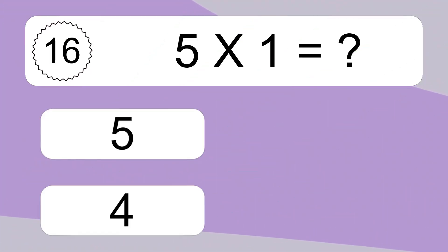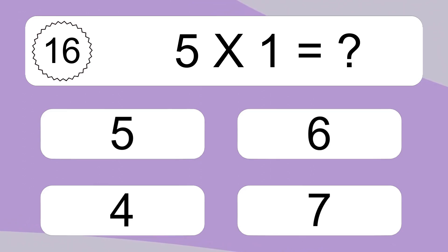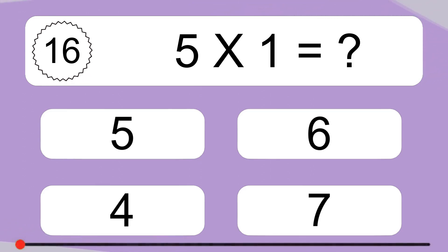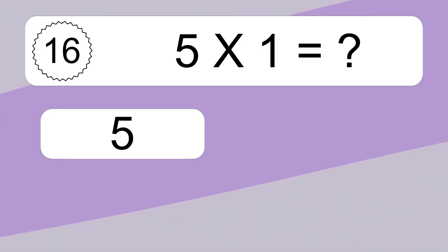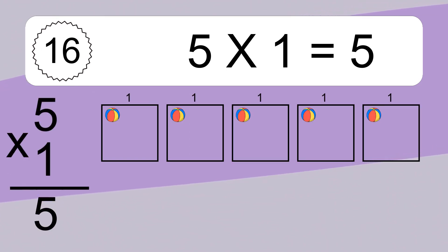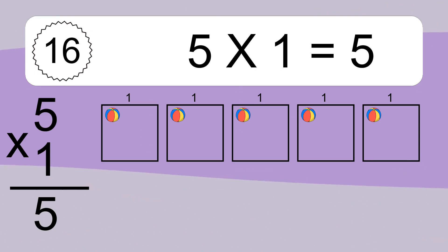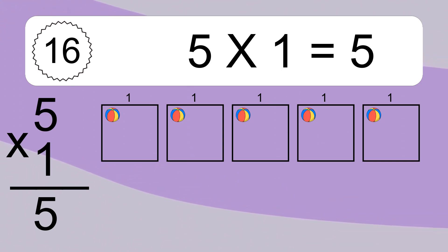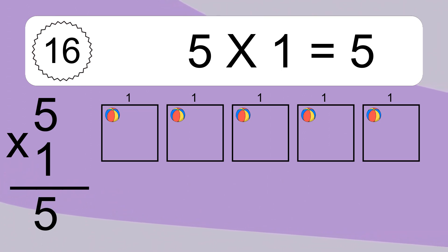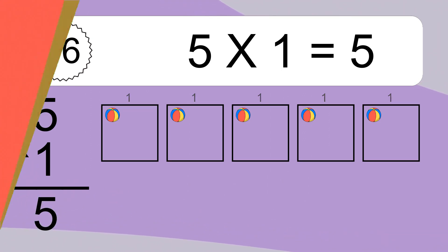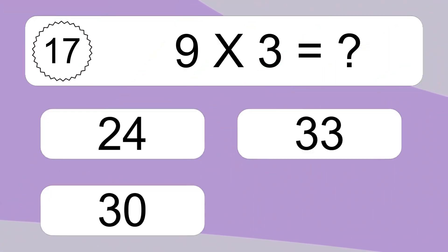5 times 1 equals what? 5 times 1 equals 5. We have 5 boxes, and each box has 1 colorful ball inside. If you count all the balls in all the boxes together, you will have 5 times 1 balls. This equals 5 balls.